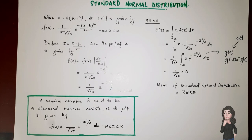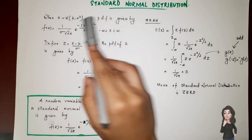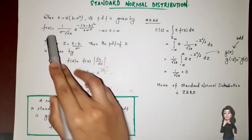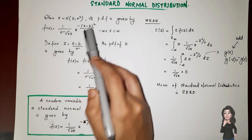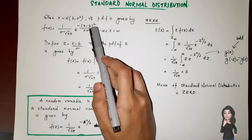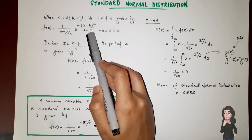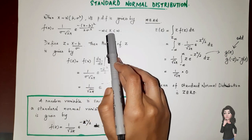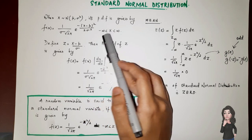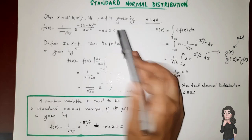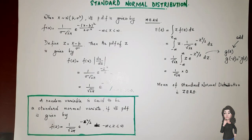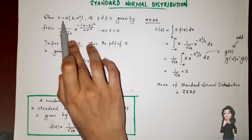Standard normal distribution. In the previous video we discussed the normal distribution where x follows N(μ, σ²) and its PDF is given by f(x) = 1/(σ√(2π)) × e raised to minus (x minus μ)² divided by 2σ². The values x takes, or the support of x, is from minus infinity to plus infinity.